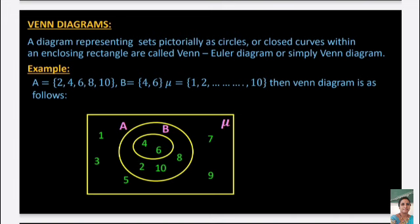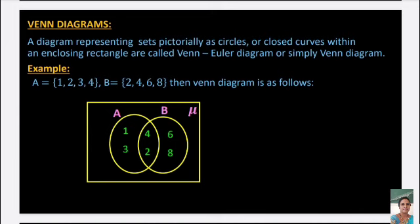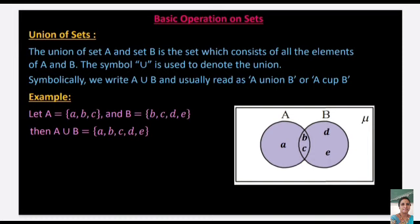Another example: A = {1, 2, 3, 4} and B = {2, 4, 6, 8}. There are two common elements: 2 and 4. We draw the rectangle for μ, then sets A and B as overlapping circles. Elements 1, 3 are only in A; elements 6, 8 are only in B; and 2, 4 are in the overlapping region of both.